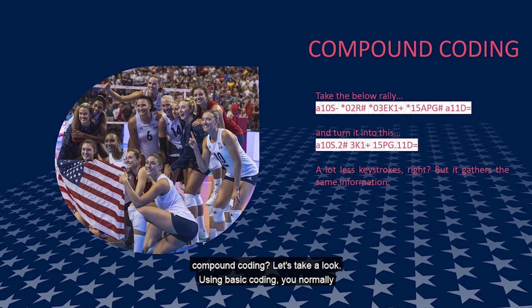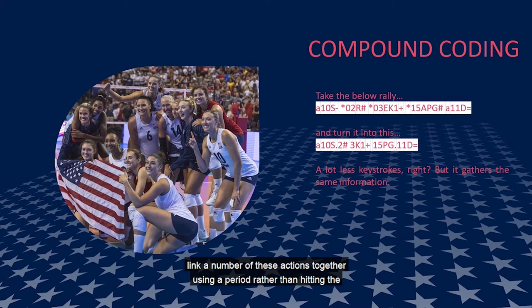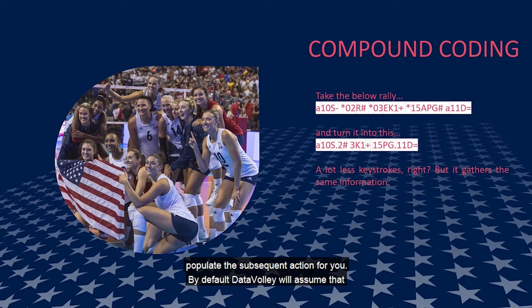Using basic coding, you normally designate whether the action was performed by the home or away team, the number of the athlete performing the action, what the action was, and then the resulting grade of that action. Each code is separated by a space. This requires a ton of keystrokes to capture all the data. By compound coding, we can link a number of these actions together using a period, rather than hitting the space bar between each action. By using the period, Data Volley will then auto-populate the subsequent action for you. By default, Data Volley will assume that the action after a serve is a receive, and after the attack is a block.